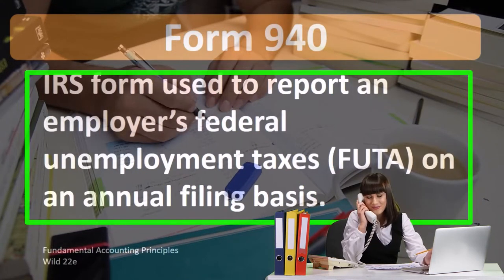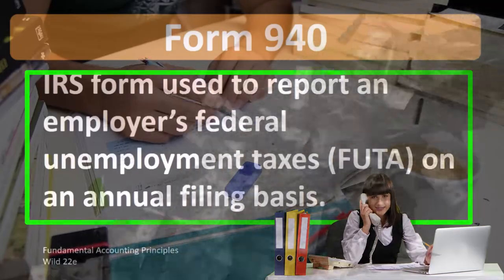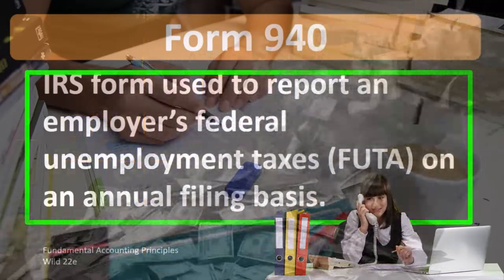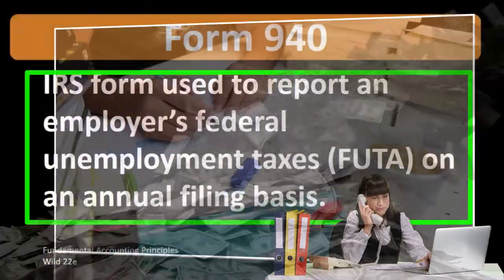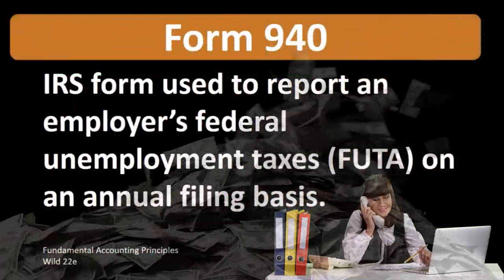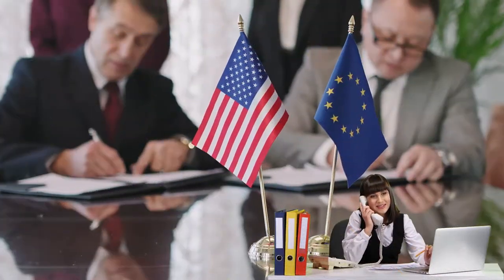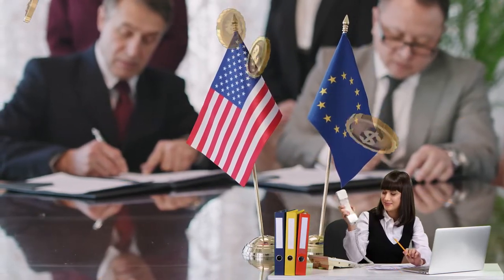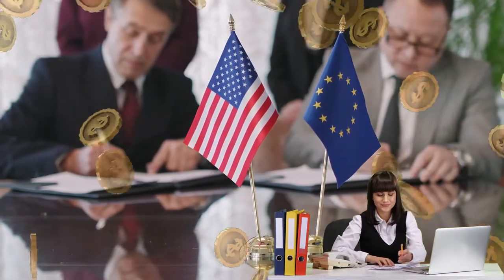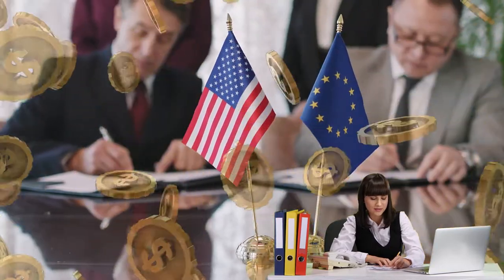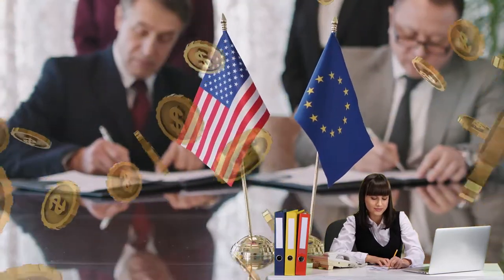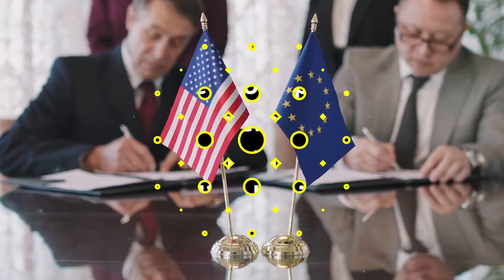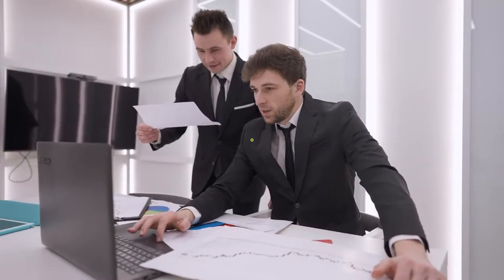When thinking about Form 940, we're talking about a payroll tax. When we think about payroll taxes, we usually think about the FICA tax — social security and medicare. Form 940 covers the federal unemployment tax, and it's only an employer tax, meaning it is not taken out of employee wages. It is based on employee wages, but it is paid by the employer only.